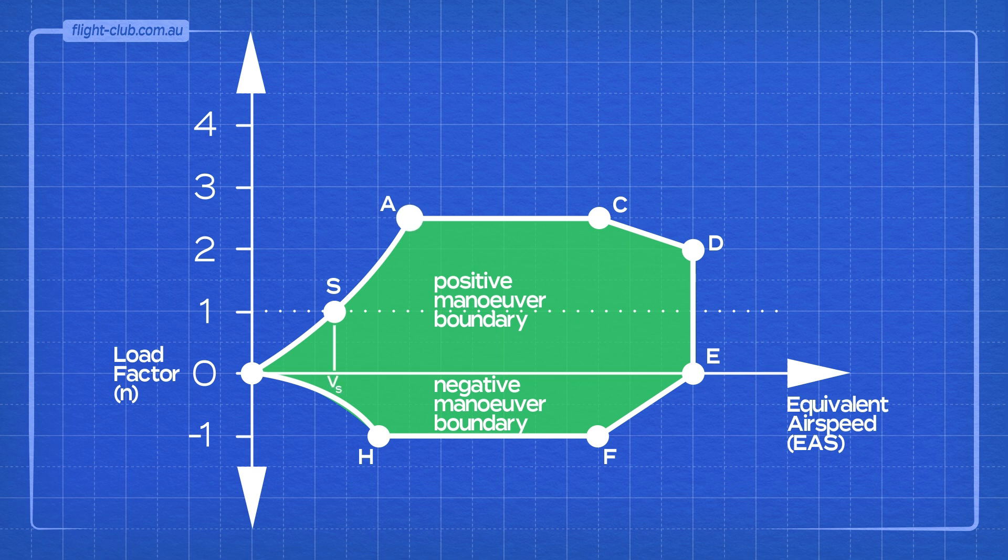Point A is the positive load factor limit. The V speed designator is VA. The airspeed corresponding to point A is called maneuvering speed.